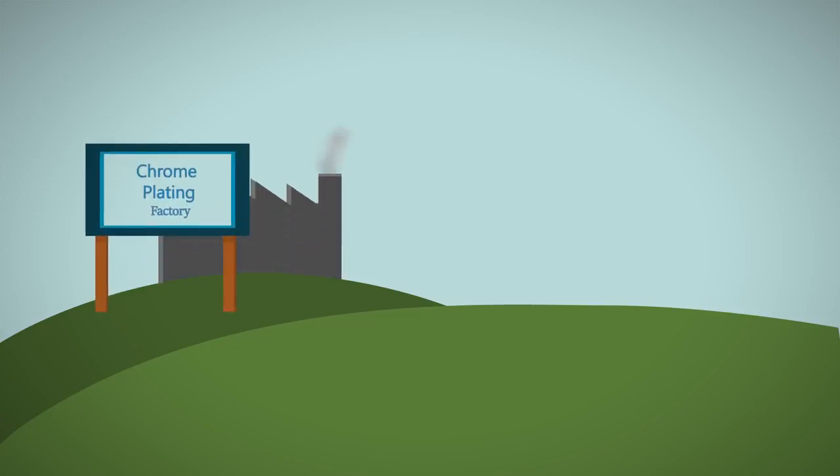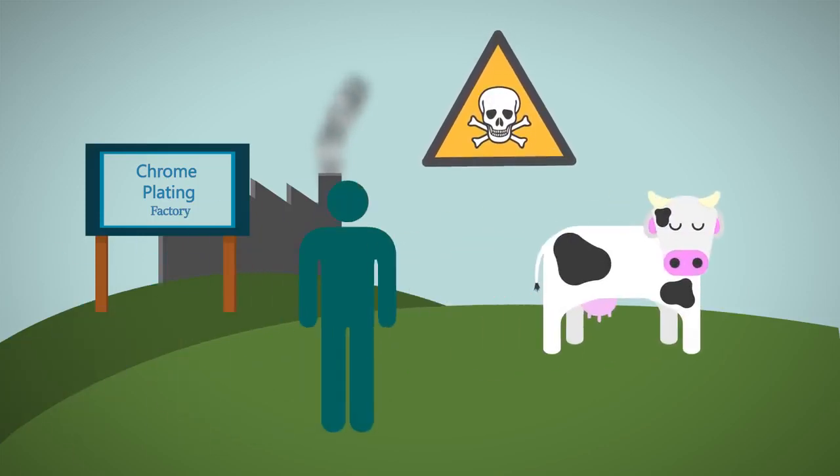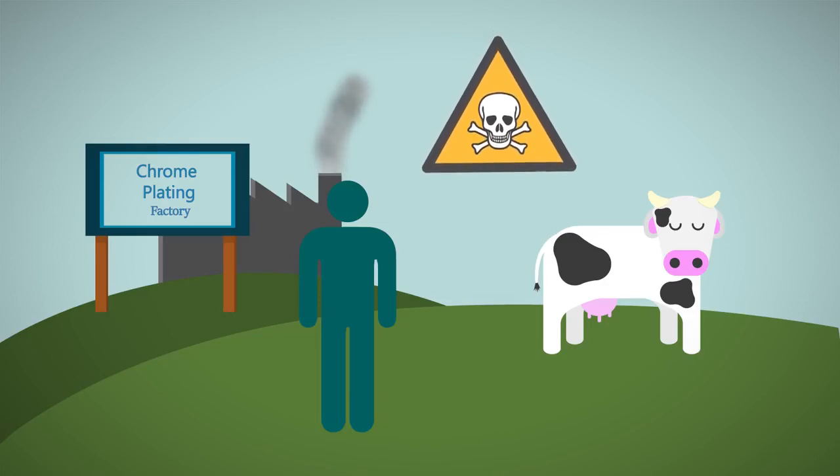There are also environmental concerns associated with some metals. Chrome plating, for example, creates waste materials which are dangerous to humans and animals. Waste products have to be treated accordingly to make sure they are safe, which can be very expensive.